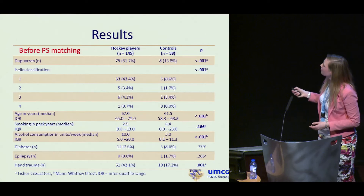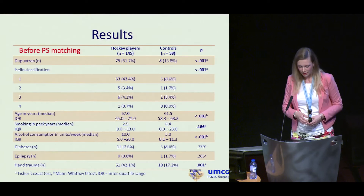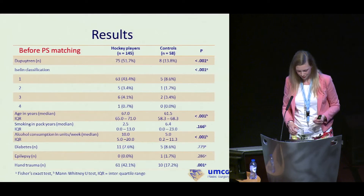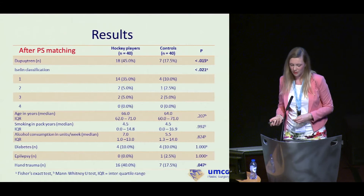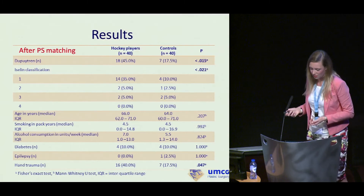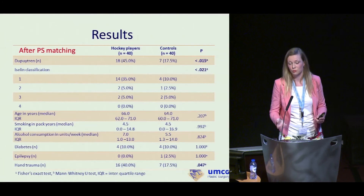Before propensity score matching, the two groups differed on almost every variable. After matching, many of those differences disappeared. You also lose many cases, but that is always the case with matching. The remaining differences are probably those related to the exposure.